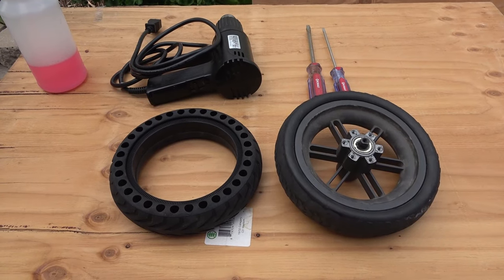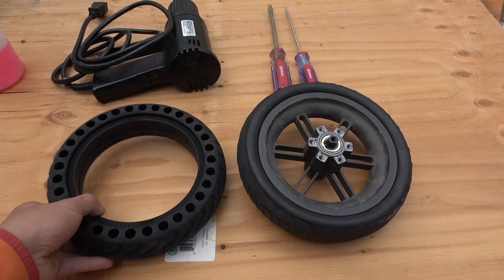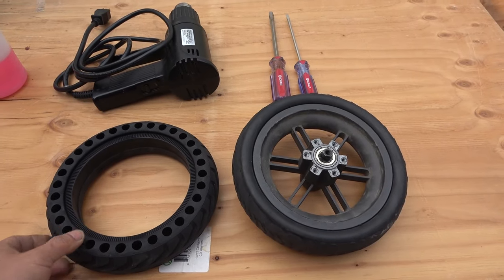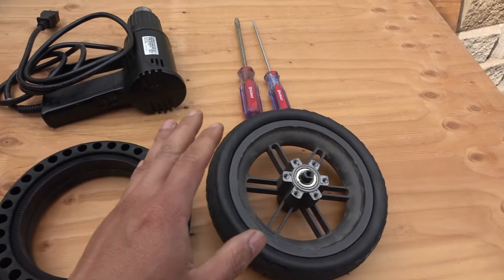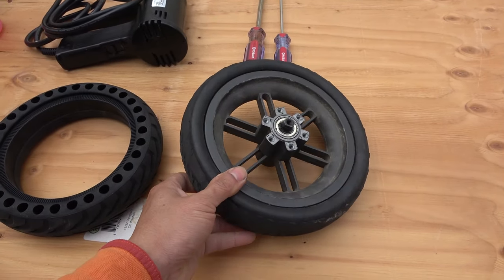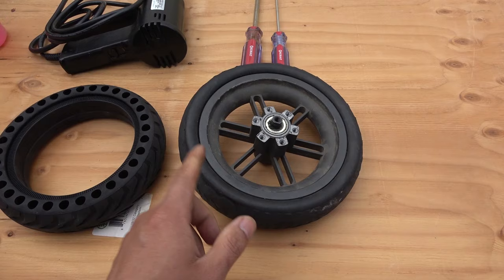In this video we'll show you how to replace the solid rubber tire for your electric scooter. So what I have is a Swagtron Swaggo 5 electric scooter wheel and it has a solid rubber tire that I need to replace.